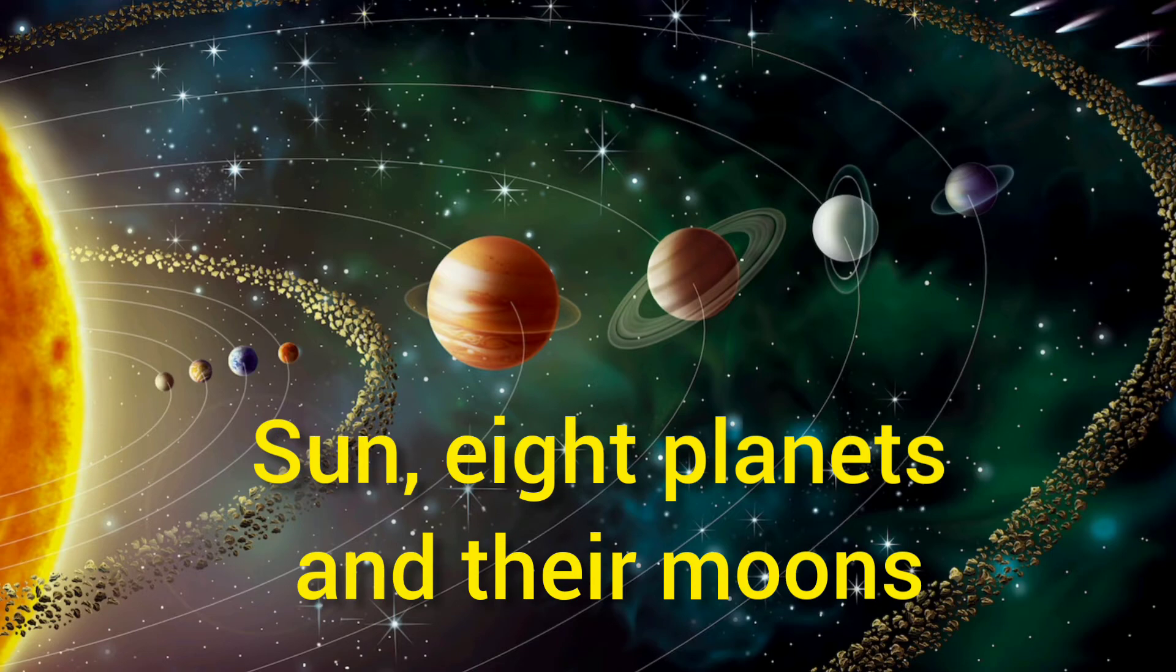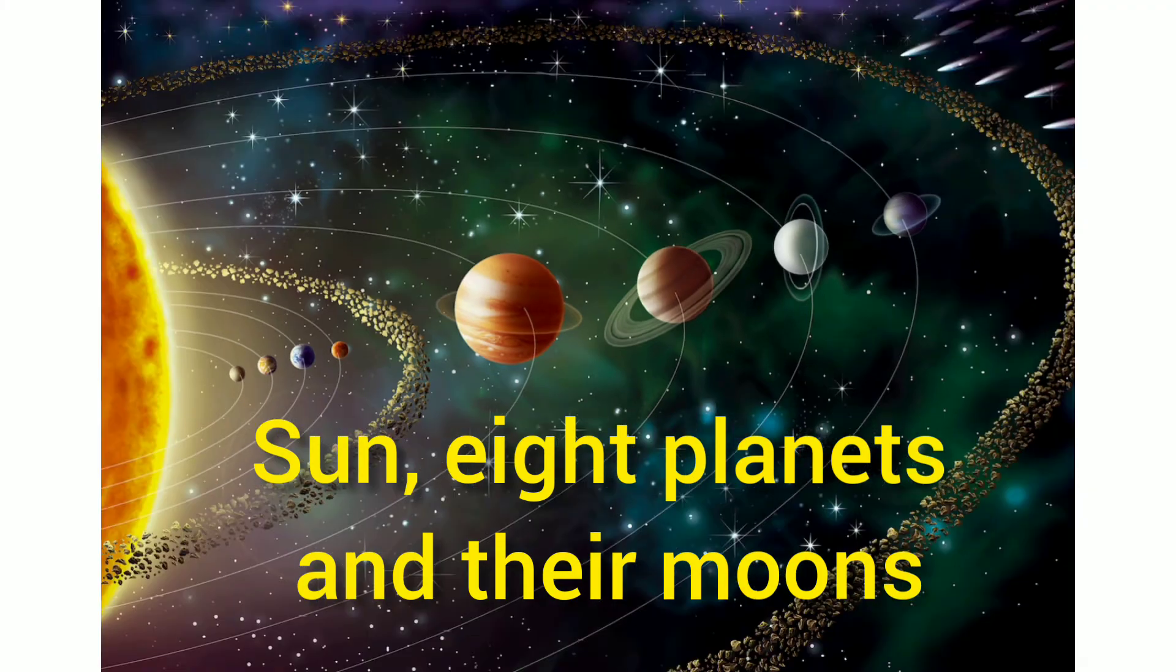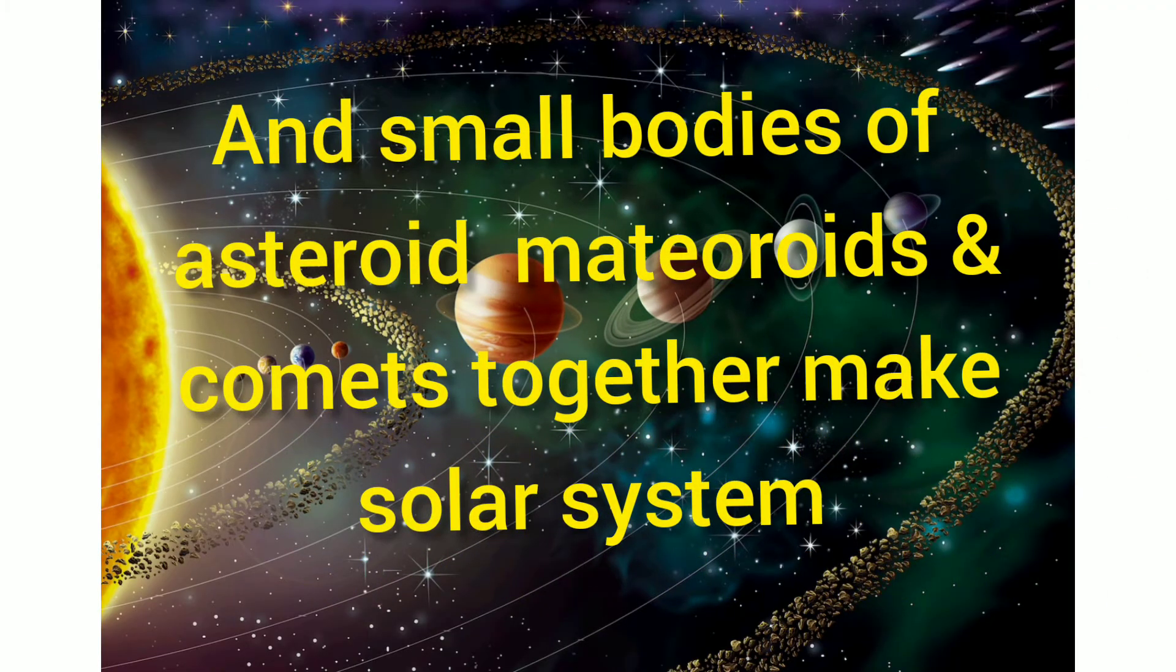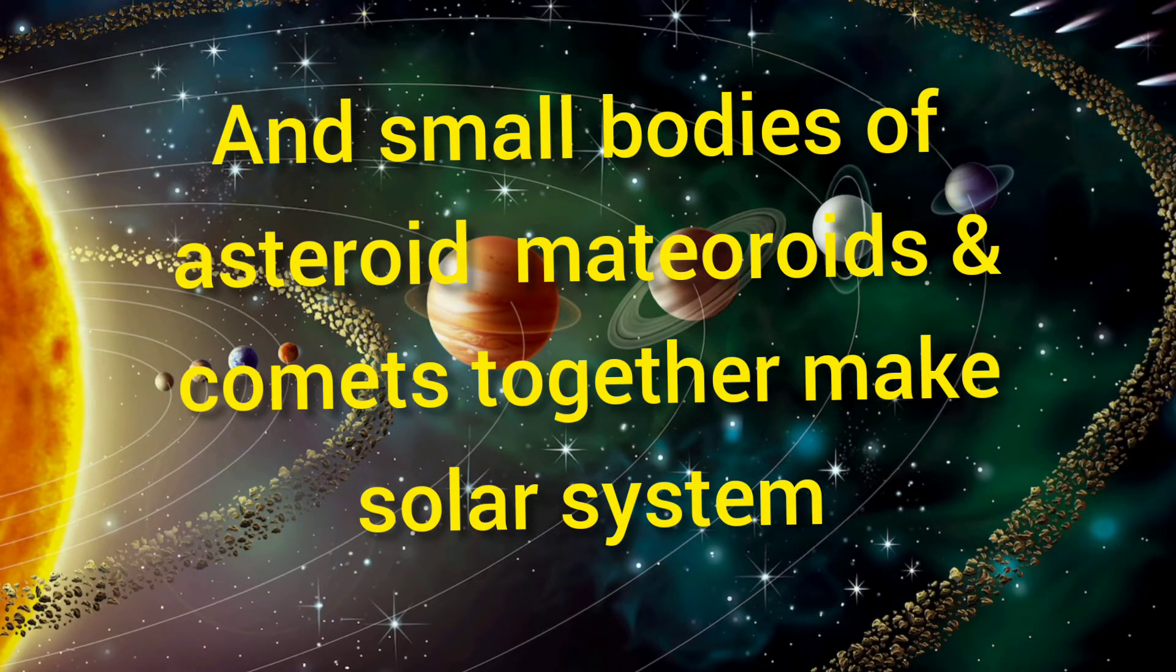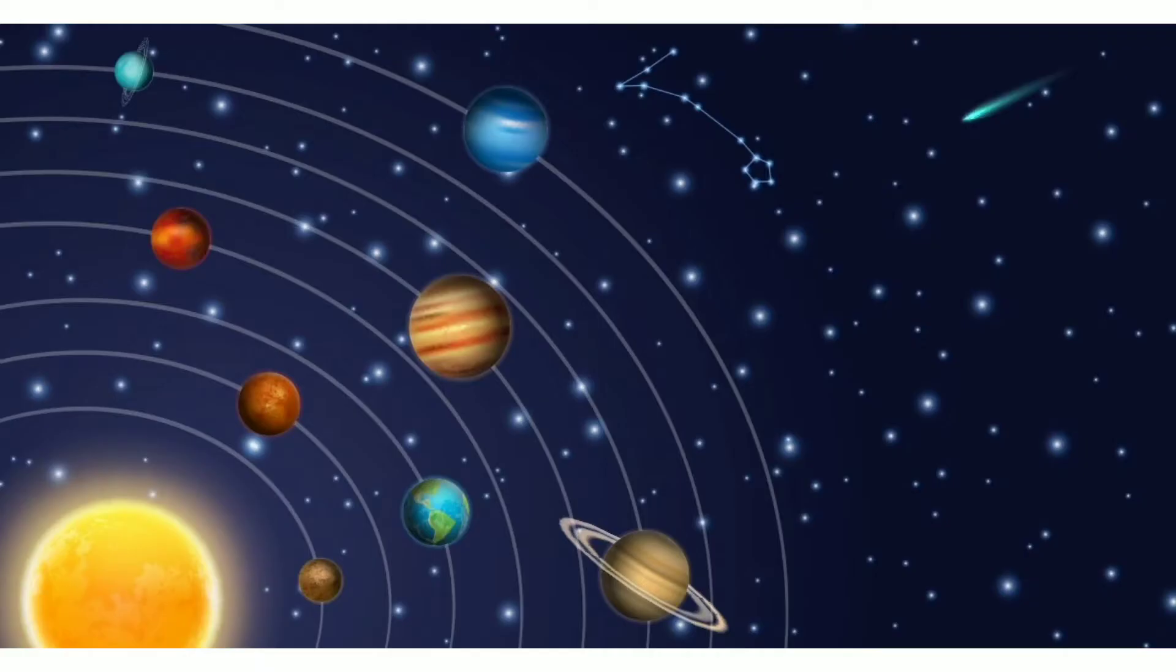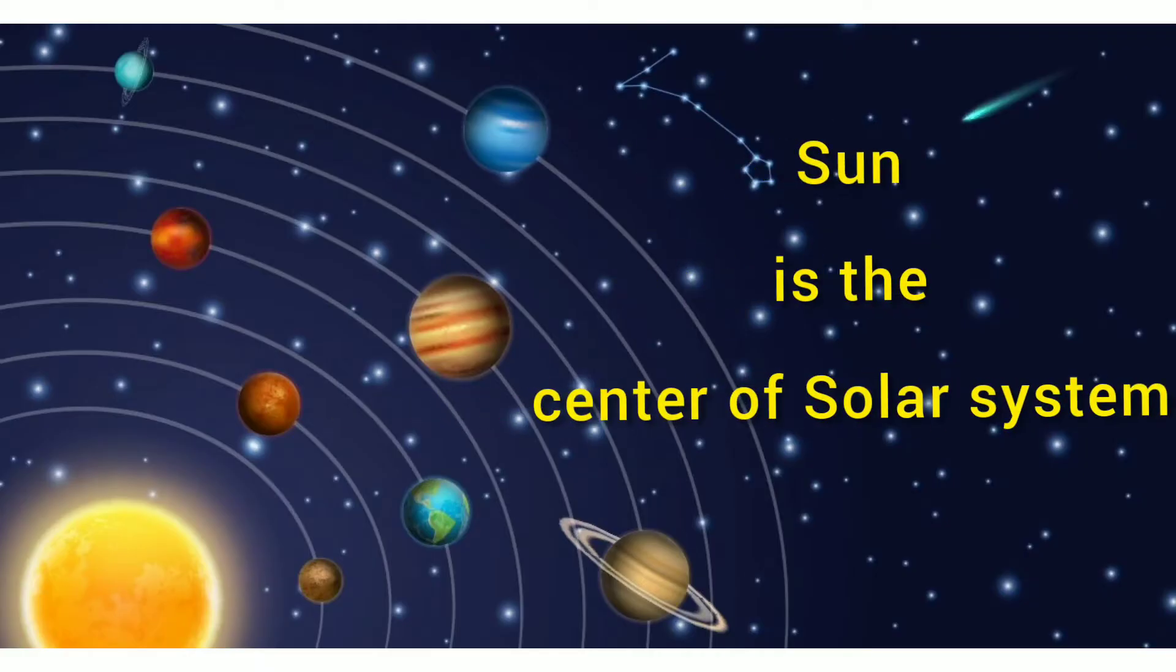Sun along with eight planets, their moons and small bodies of asteroids, meteoroids and comets together make a solar system. Solar system has got sun as their center and all other objects revolve around it.